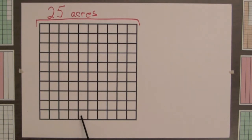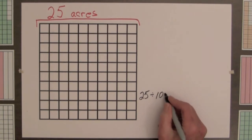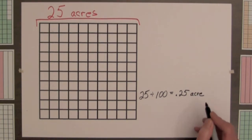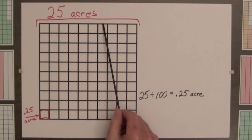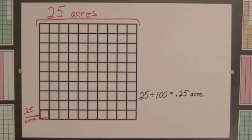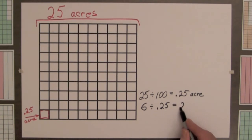We are given the whole, 25 acres, and we can find the value of each small square by computing 25 divided by 100 equals 25 hundredths of an acre. We are also given that part of the 25 acres — 6 acres — will be for a playground. To determine how many 25-hundredths-of-an-acre small squares are needed for 6 acres, we compute 6 divided by 25 hundredths equals 24.